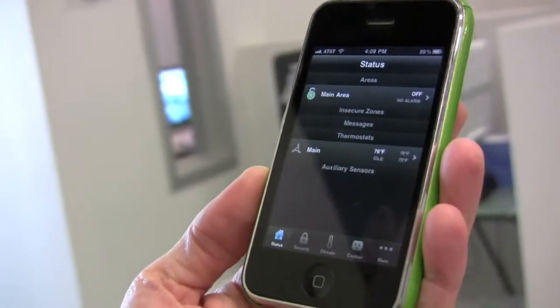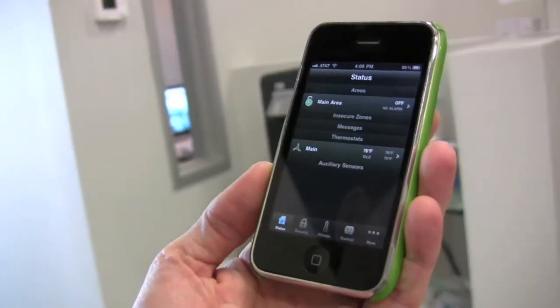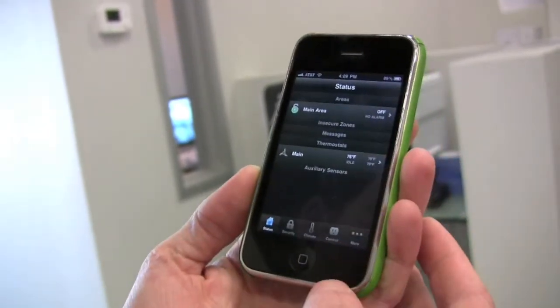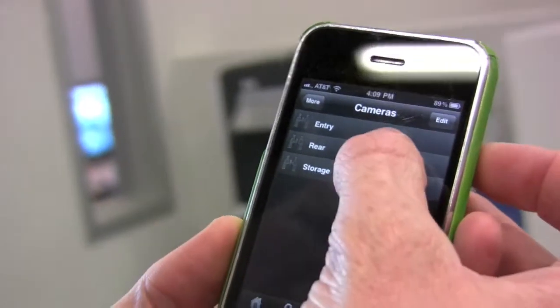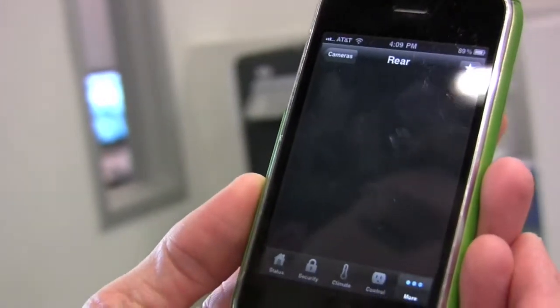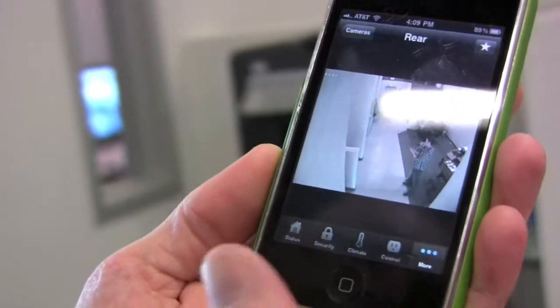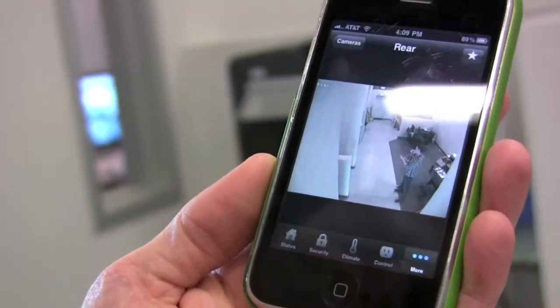This is one of many examples of an HAI app for the iPhone. You can see here we start off with the status page. By clicking on More, Cameras, My Rear Camera, you'll see the back half of our office, me recording the video.